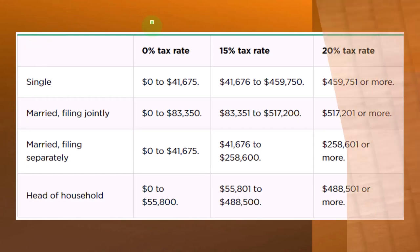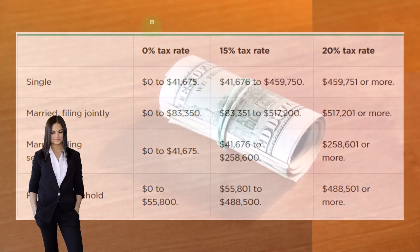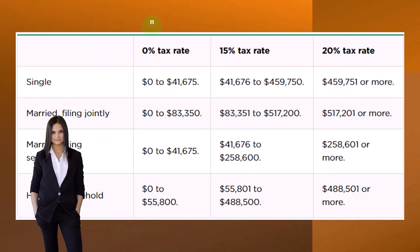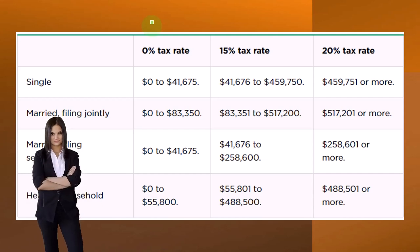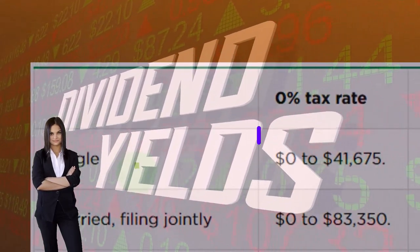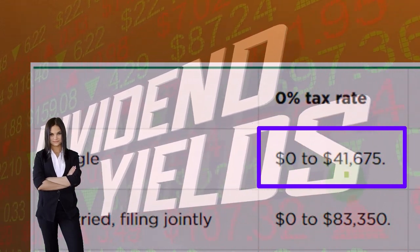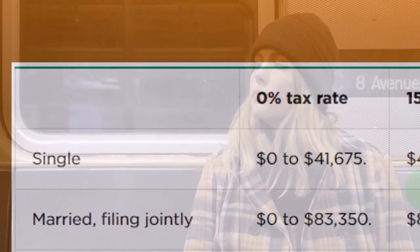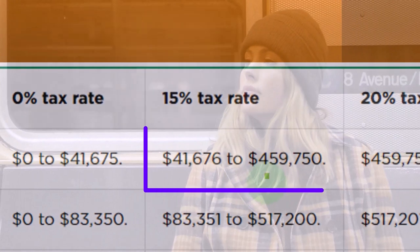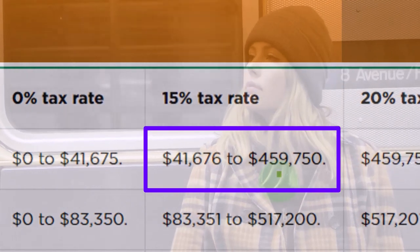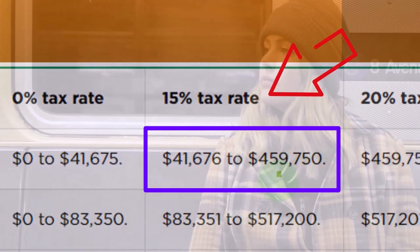Here are the dividend rates. Notice we have different rates if we qualify for the preferential qualified dividends treatment. That usually applies to U.S. entity corporations. If that's the case, we'll have these preferential rates. If you're single with income up to $41,675, the rate is zero. If you're single with income from $41,676 up to $459,750 of taxable income — essentially adjusted gross income — then you're at the 15% rate.